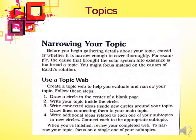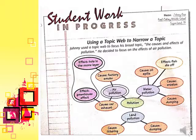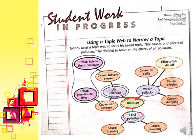Here is an example of how a topic web works. Starting with the word 'pollution' in the center, you can expand it to water pollution, air pollution, and land pollution. From each type, you identify causes and effects — for example, under water pollution: cause: oil spills, effect: fish die off; cause: erosion; cause: dumping garbage and industrial waste into water streams.